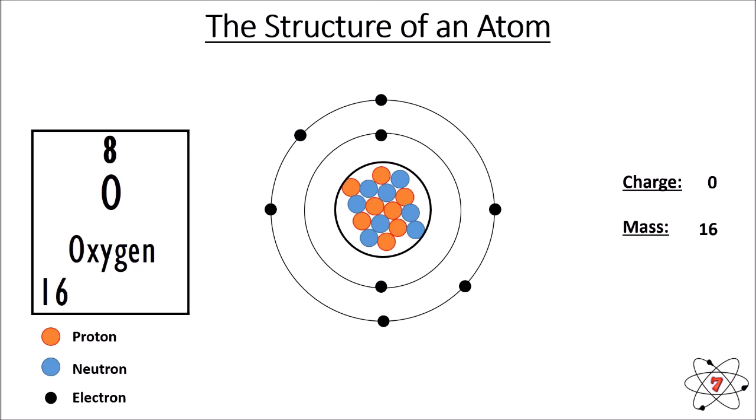It's worth pointing out that in this picture, even though the electrons appear static and stationary, in a real atom they will be orbiting the nucleus. This is just a model to explain how things work so that you can understand it.